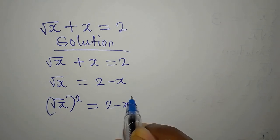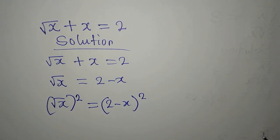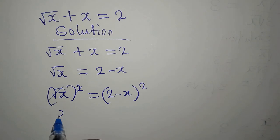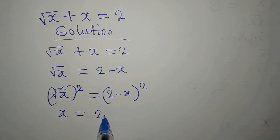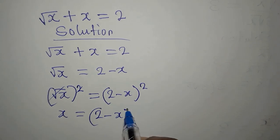Here now we have 2 minus x, then we square it. This is going to go with this, and x is equal to 2 minus x to the power of 2.